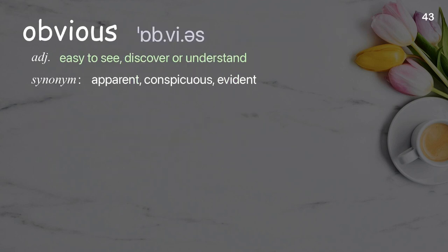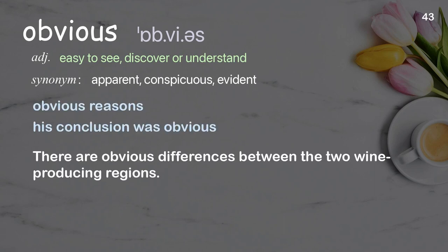Obvious: easy to see, discover, or understand. Examples: obvious reasons; his conclusion was obvious; there are obvious differences between the two wine-producing regions.